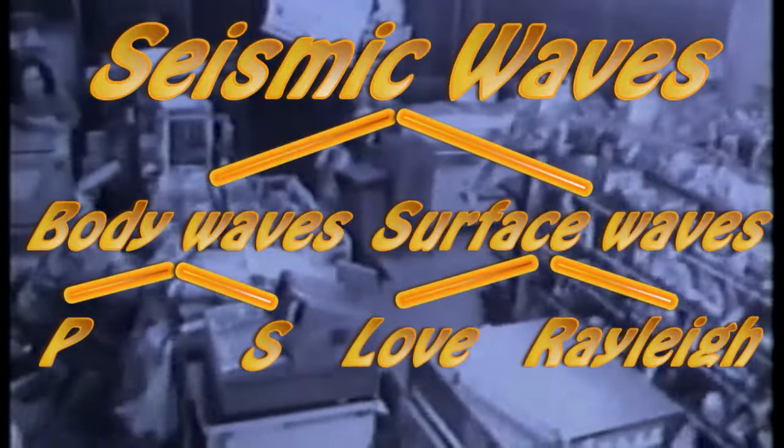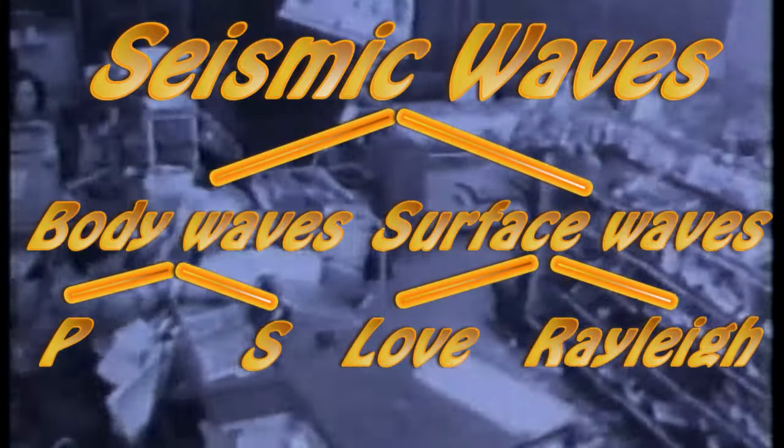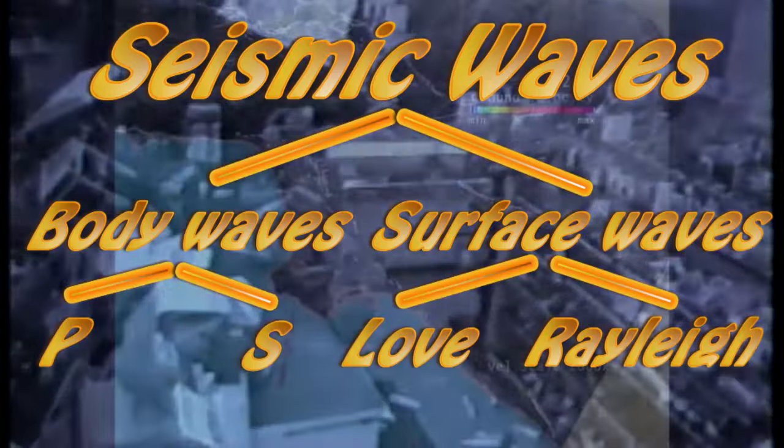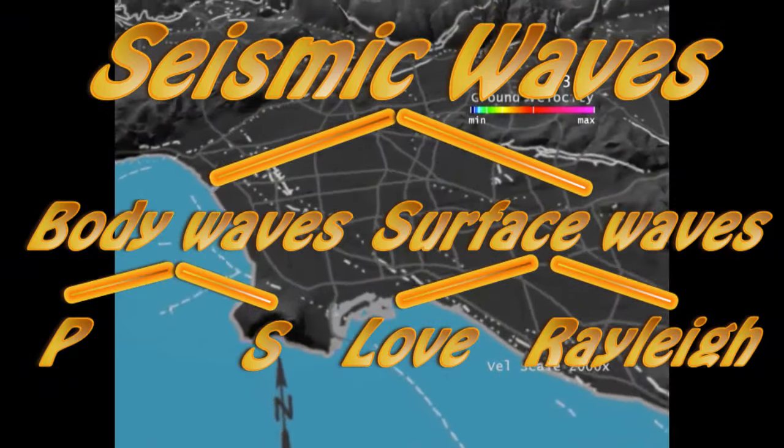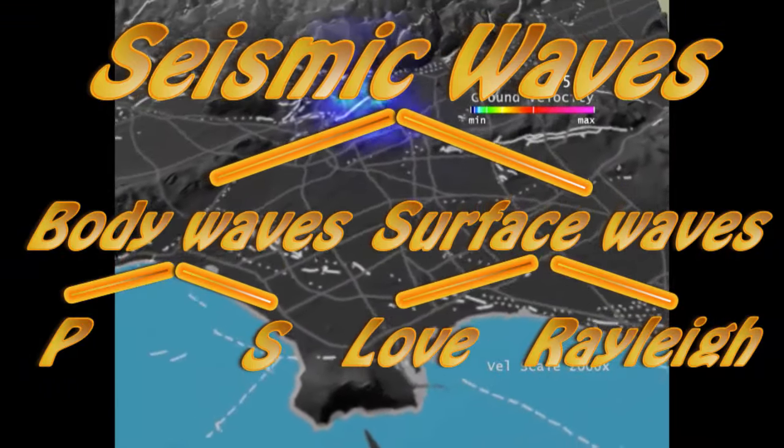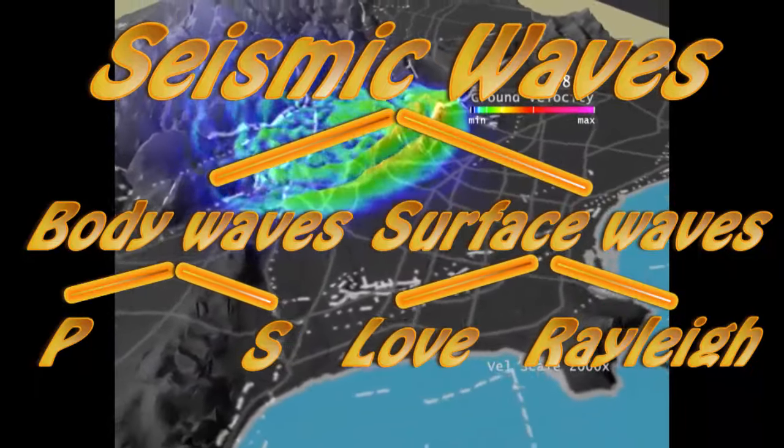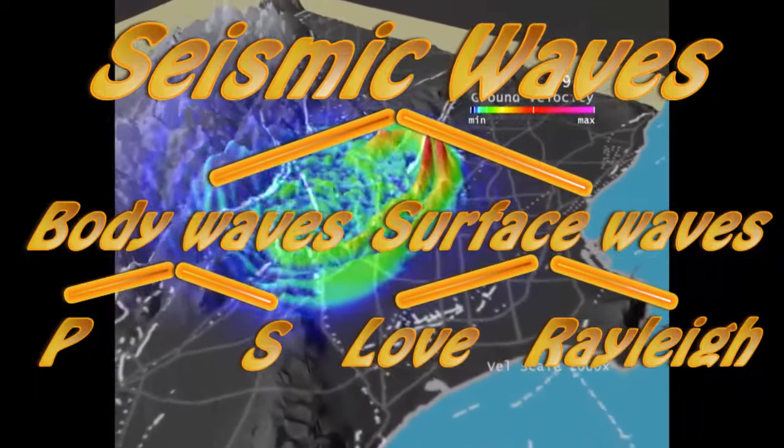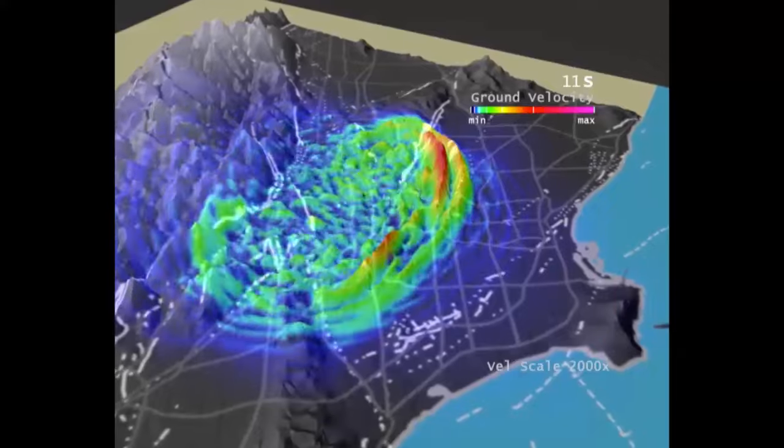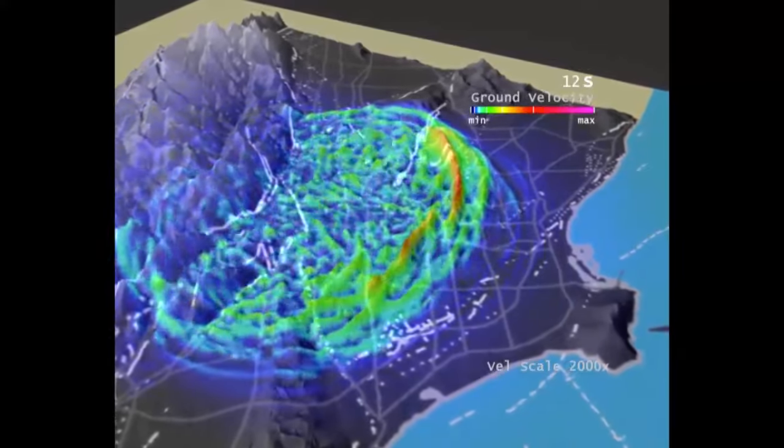To recap, seismic waves leave a focus, with P waves going through the body of the Earth and arriving first, the S waves also within the Earth arrive second, and when these waves hit the surface a lot of this energy gets trapped right along the skin of the Earth creating Rayleigh and Love waves, which in time usually come close on the tail of the S waves.